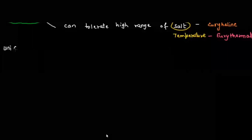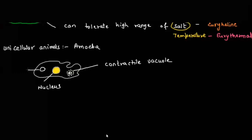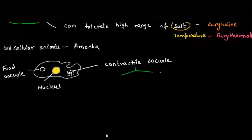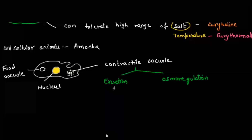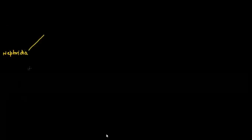Unicellular animals like amoeba don't have any specialized excretory organ. Amoeba excretes through the contractile vacuole across the cell membrane. It has a contractile vacuole, nucleus, and food vacuole. The contractile vacuole plays two important roles: one is in excretion — removal of waste — and the second is in osmoregulation — maintaining water and salt balance. In unicellular organisms, the contractile vacuole plays an important role.